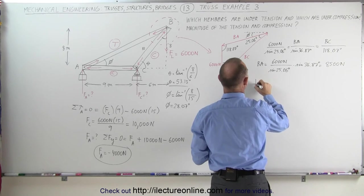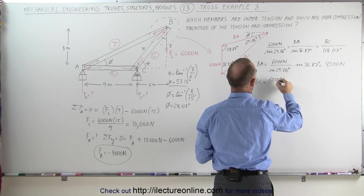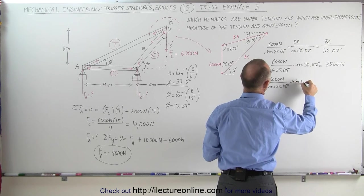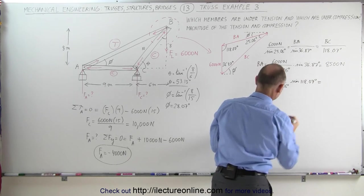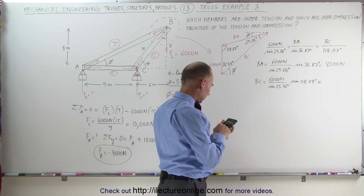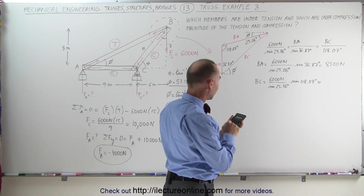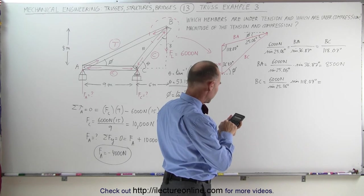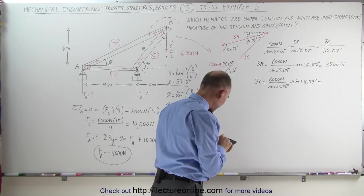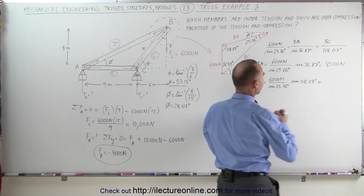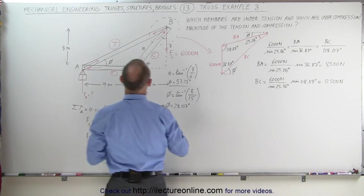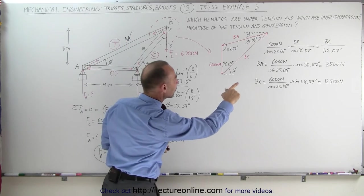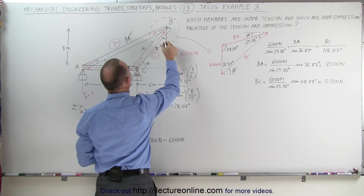Then we find BC, which equals 6,000 Newtons divided by the sine of 25.06 degrees, times the sine of 118.07 degrees. This gives us 12,500 Newtons for that force. So we've found the force on BA — 8,500 Newtons — and the force on BC — 12,500 Newtons.